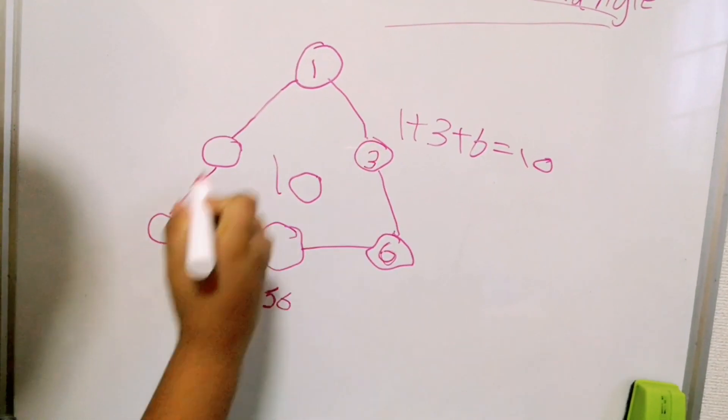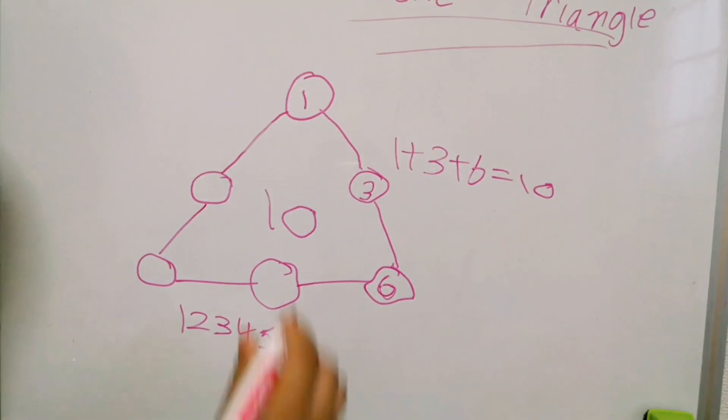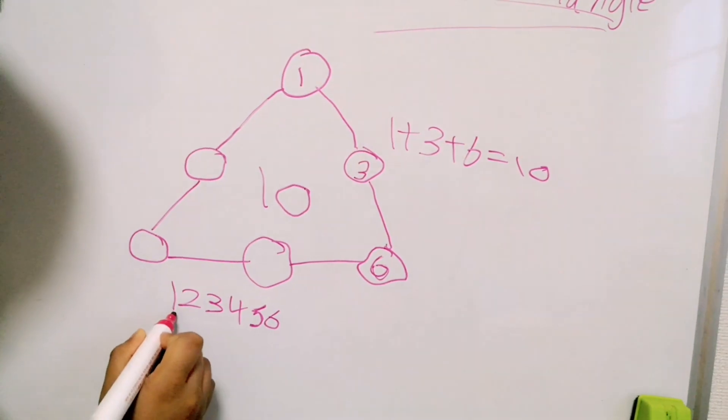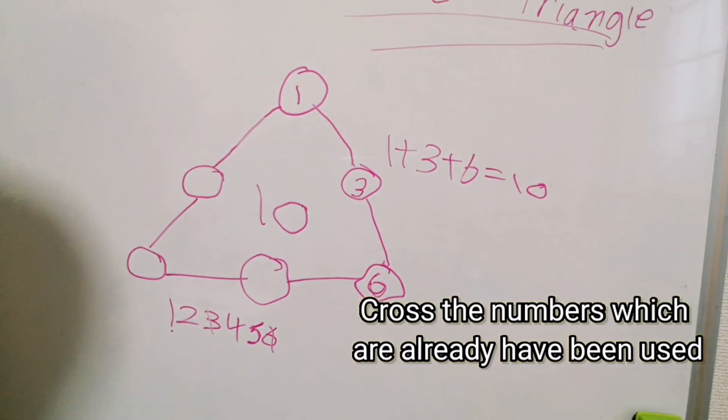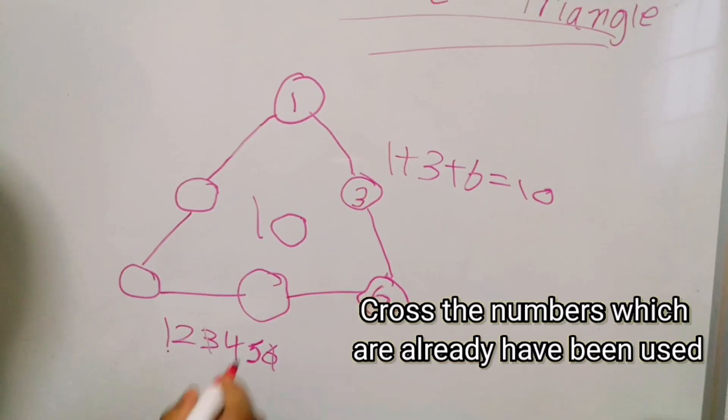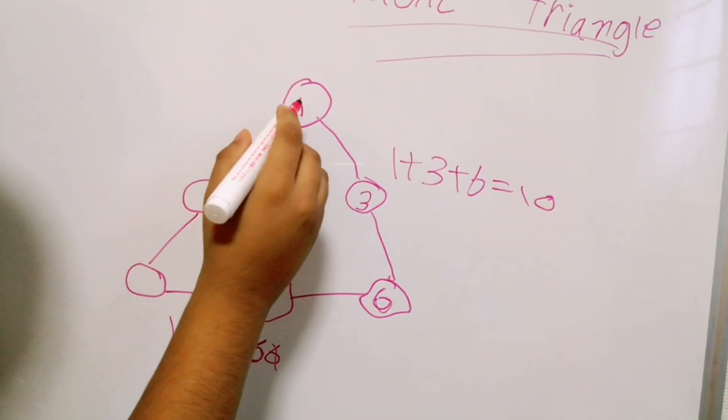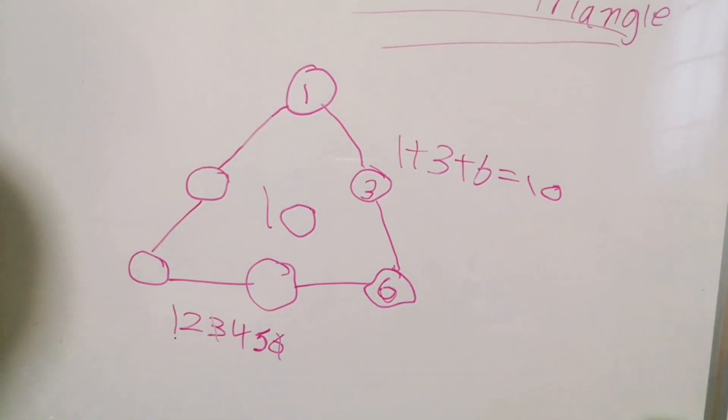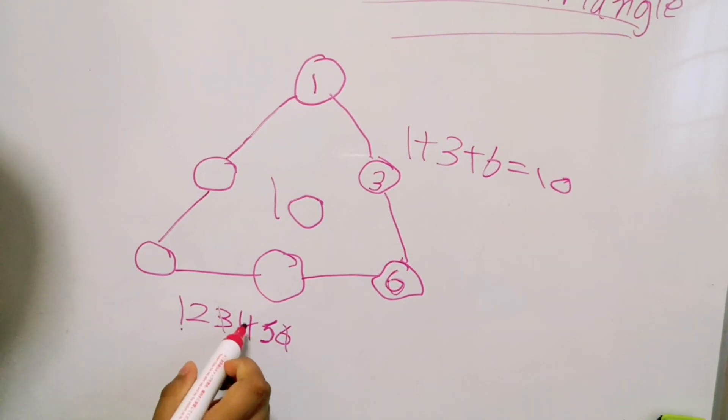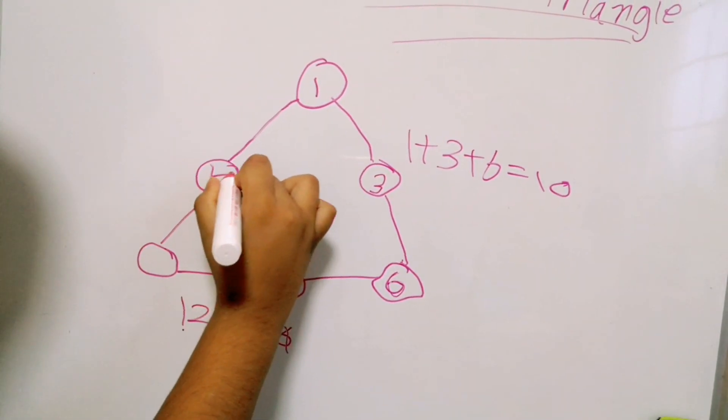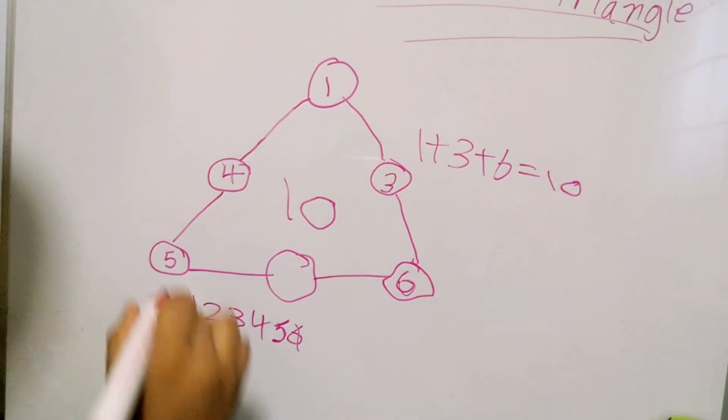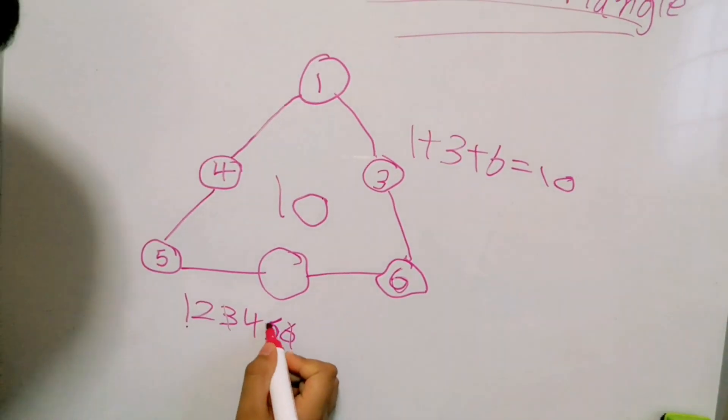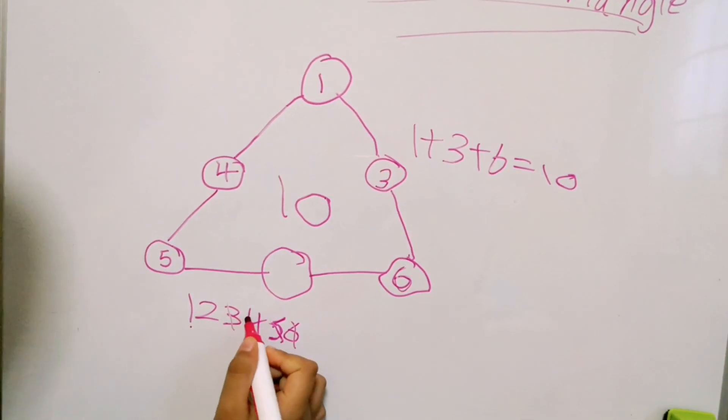I'm going to make it on this side now. So 1, I have to cross 3 and 6 because they're already used. Now, here's 1 already there. Now I will put 4, 5, and 10. So I will cross 5 and 4.